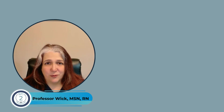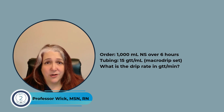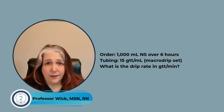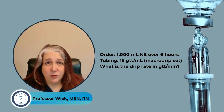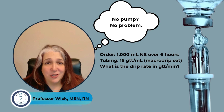You're on the med-surge floor. The IV pump in your patient's room just failed. The provider has ordered a thousand milliliters of normal saline to be infused over six hours. The only tubing available is a macro drip set at 15 drops per milliliter. You need to calculate the manual drip rate in drops per minute to keep the infusion on track. No guessing — just dimensional analysis done right.